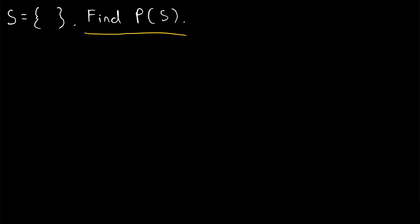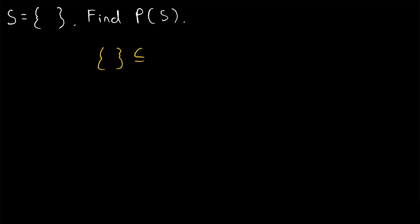For the first one, of course, we've got a classic: find the power set of the empty set. All we have to do is list the subsets. The only subset of the empty set is the empty set itself. We know this because if the empty set wasn't a subset of the empty set, that would mean the empty set contains an element that the empty set doesn't — and obviously that's not true because the empty set contains no elements. So the power set of the empty set contains just the empty set.